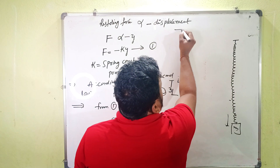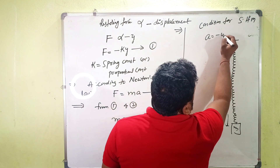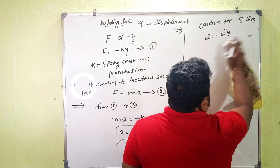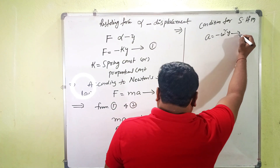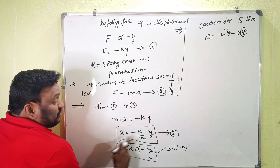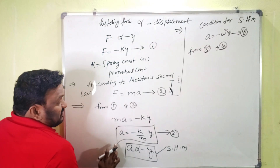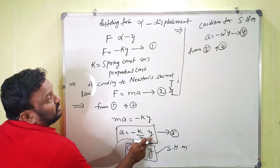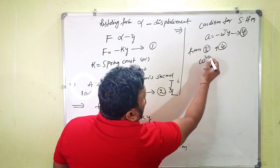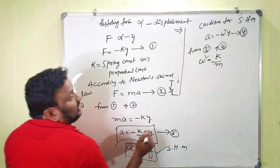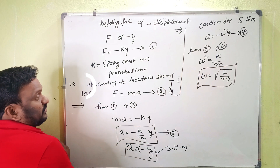The condition for SHM is: a equals minus omega squared times y — equation four. Comparing equation three (a equals minus k/m times y) with equation four (a equals minus omega squared times y), we get omega squared equals k/m. Therefore, omega equals the square root of k/m. This is the formula for angular frequency omega.